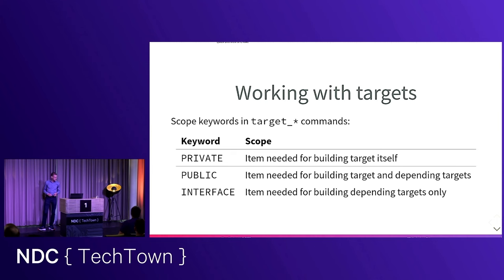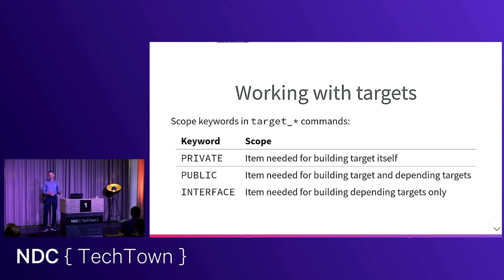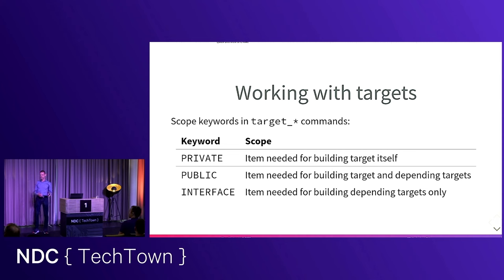You've seen the keywords PRIVATE, PUBLIC, and INTERFACE. PRIVATE items are needed to build the target itself. INTERFACE items are not needed to build the target itself, but are needed by targets that depend on it. PUBLIC is a combination of both — things needed to build the target itself and by targets that depend on it.